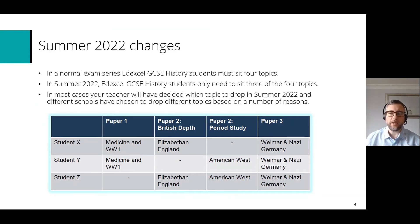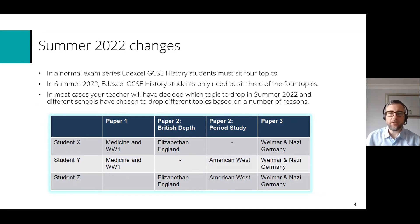As you can see, paper 3 — in this case I've selected Weimar and Nazi Germany — is compulsory, so everyone has to do paper 3. But students X, Y and Z have all dropped a different topic: student X has dropped the period study, student Y has dropped the British Depth study, and student Z has dropped the paper 1 thematic study.